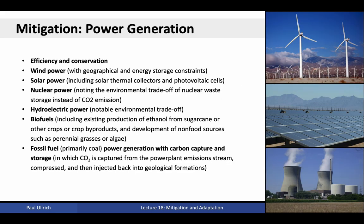A key component of mitigation efforts is the switch to renewable and clean energy sources, including wind, solar, nuclear, hydroelectric, biofuels, and fossil fuels with carbon capture and storage. Wind power and solar power have known geographical and energy storage constraints, although technologies are advancing rapidly. Nuclear power, which only emits water vapor into the atmosphere, is a good option to cover the issue of intermittency of wind and solar resources, although we have to deal with environmental issues related to nuclear waste storage and disposal. Hydroelectric power, where capacity exists, provides a clean alternative, although it has significant impacts on the local environment and has already been installed in most feasible regions.